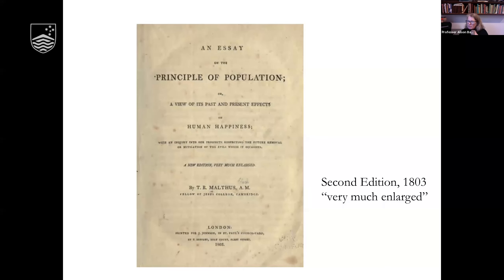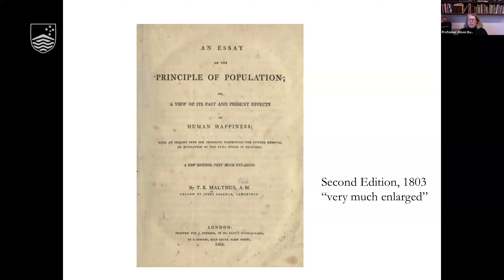Joseph Johnson gets back to him very quickly and says he wants another edition as soon as possible. So Thomas Robert Malthus produced the second edition in 1803, very much enlarged — an understatement, as it's probably ten times as long. My original copy from 1803 on my shelves is two volumes about this thick, whereas the first is quite thin.